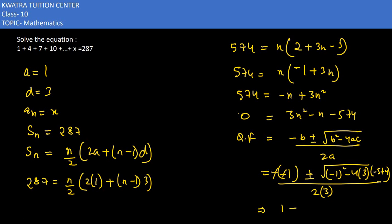Minus and minus cancel to give plus. 1 plus 1 is 1, and plus 4 into 3 is 12, 12 in multiplication with 574. So 1 plus 6888 in division by 6. So the value will be 6889.